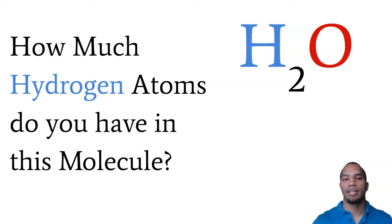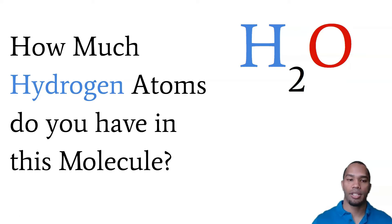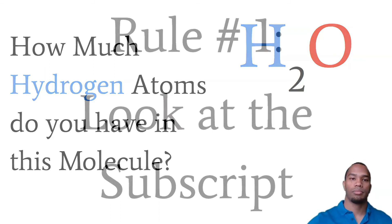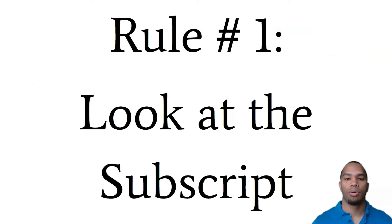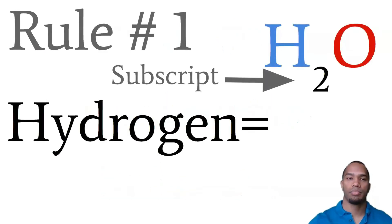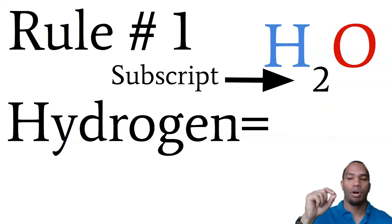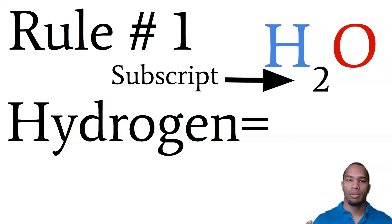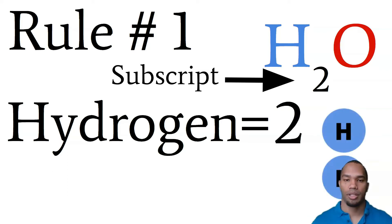So let's take a look at this molecule. How many hydrogen atoms do you have in this molecule? This is H2O. Rule number one: all you got to do is look at the subscript. The subscript for hydrogen is that small number on the right side of the element. We see two, so hydrogen is two — you have two atoms of hydrogen.